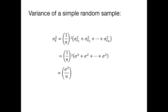Just as we calculate means, we also want some measure of variability around that mean, so we calculate the variance of the simple random sample. We're still dividing by n, and we sum up each of the variances for each x sub i. Think about the variance for each observation, sum them all up for the entire data set, divide by n, and square them because we're dealing with the variance.